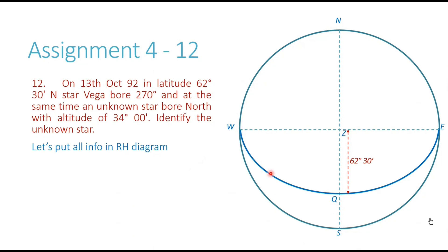The equinoctial is passing from the Q point and always passes through the east and west points. So W, Q, E in our diagram represents the equinoctial for this observer. Once the equinoctial is there, we can also show the pole. The observer is in the northern hemisphere, so we will have the north celestial pole as our elevated or visible pole. The pole is 90 degrees away from the equinoctial, so from the Q point I go 90 degrees — this is the pole, represented as P.